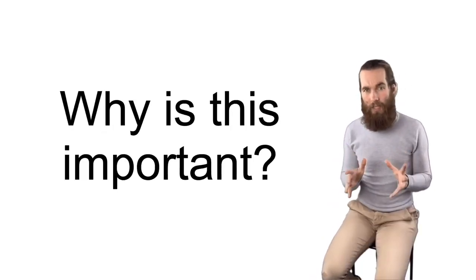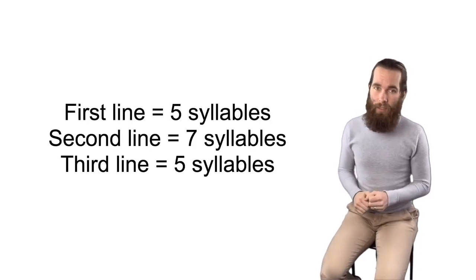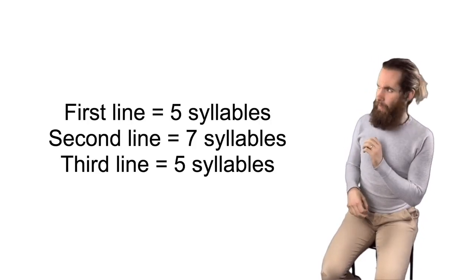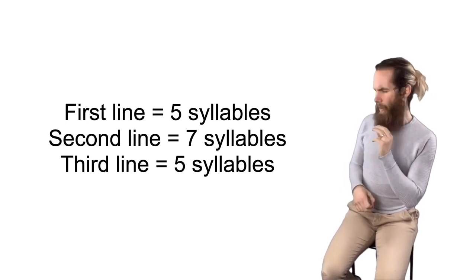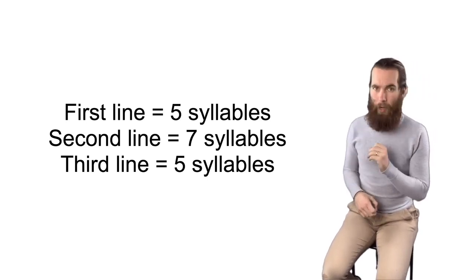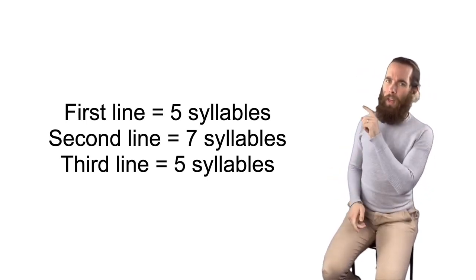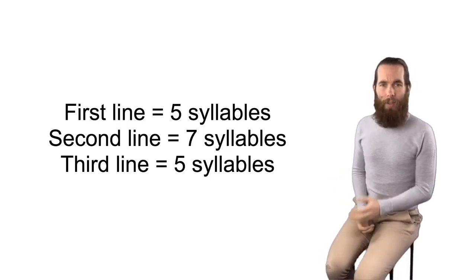Haikus have a very specific syllabic structure — a specific number of syllables in each line. Haikus are made up of three lines. The first line is made up of five syllables, the second line is made up of seven syllables, and the third line is made up of five syllables as well. Now keep in mind they are syllables and not the number of words.